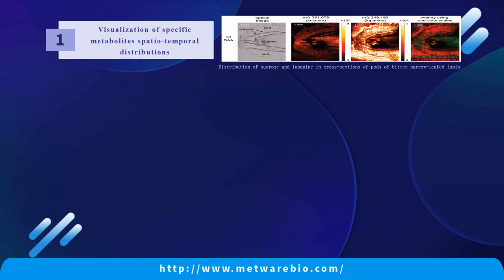We can look at this example on the right. Using spatially resolved metabolomics, the paper on the right mainly studied the distribution of quinolizidine alkaloids in Lupinus angustifolius seeds and how they accumulate during growth. It turned out that quinolizidine alkaloids were transported into the seed by other parts of the plant, not synthesized by the seed itself.